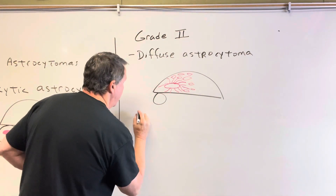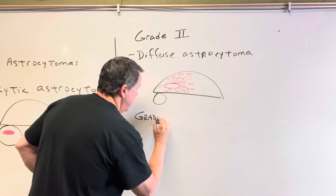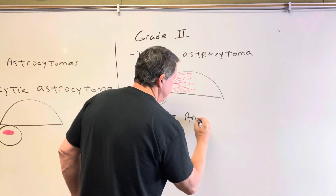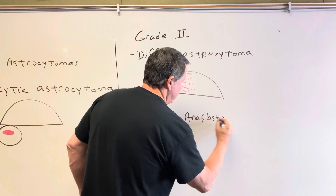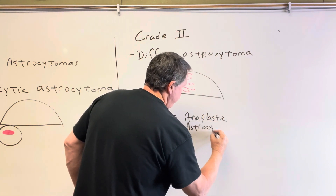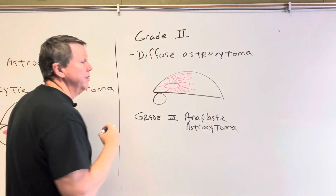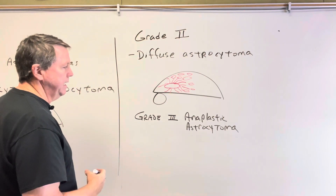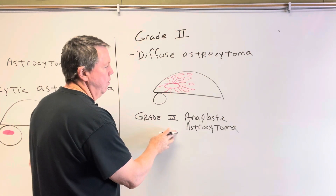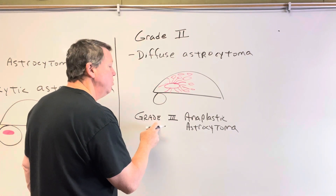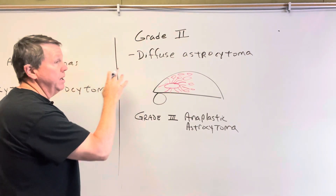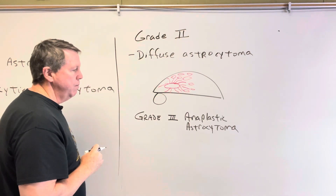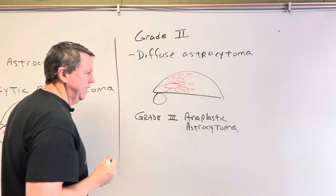Grade two can then go on to become a grade three astrocytoma, called an anaplastic astrocytoma. At this point it becomes more aggressive and is considered malignant. Surgery is not as successful. Most of the time grade three arises because a grade one or grade two has evolved into a grade three.